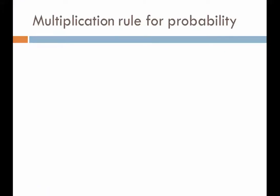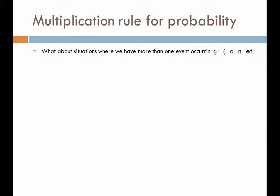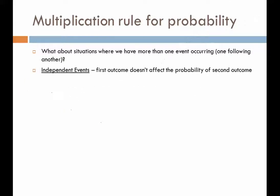When we talked about the multiplication rule, we talked about situations where we have one event followed by a second event, such as the tossing of a coin or the rolling of a die. When you have one event followed by another, the one thing we want to ask ourselves is: are these events independent or dependent? If they're independent, then their individual occurrence does not affect the probability of the other — the first outcome won't affect the probability of the second outcome.